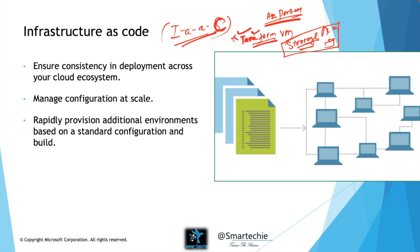It ensures consistency of deployment across your cloud ecosystem. For example, today you have one storage account and you want to replicate the same storage account in a different cloud or different region. You have your code available — execute that same code to create another storage account, an exact replica with the same configuration. Only your cloud, region, or zone might change.